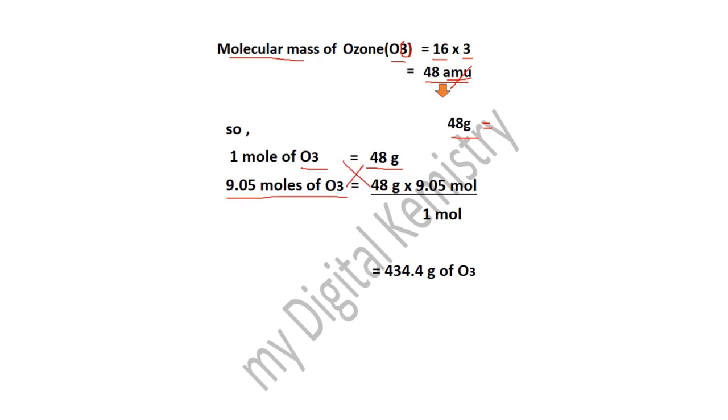So اس کے لئے ہم cross multiplication کر دیں گے۔ آپ دیکھ سکتے ہیں کہ 48 کو ہم نے multiply کر دیا ہے 9.05 سے divided by ہمارے پاس آ گیا 1 mol. Mol کے ساتھ cancel ہو گیا اور یہاں پر ہمارے پاس رہ گیا grams. So یہاں ہم پر آ گیا ہمارے پاس آنسر 434.4 grams of ozone.